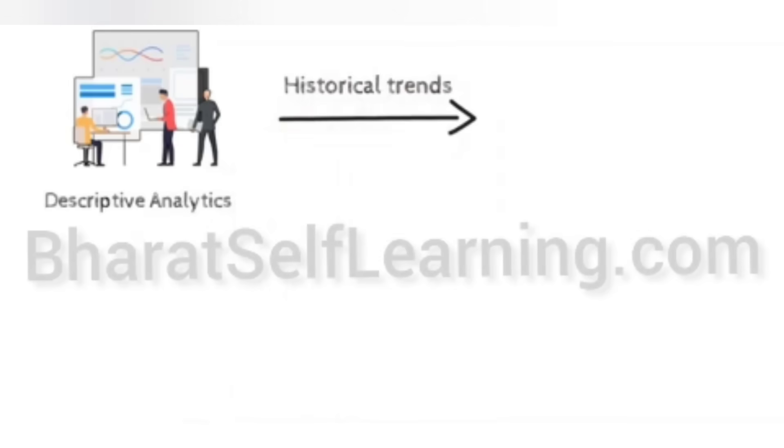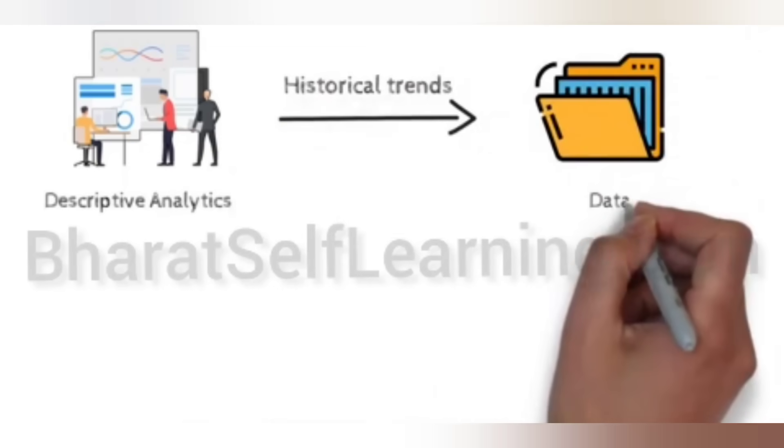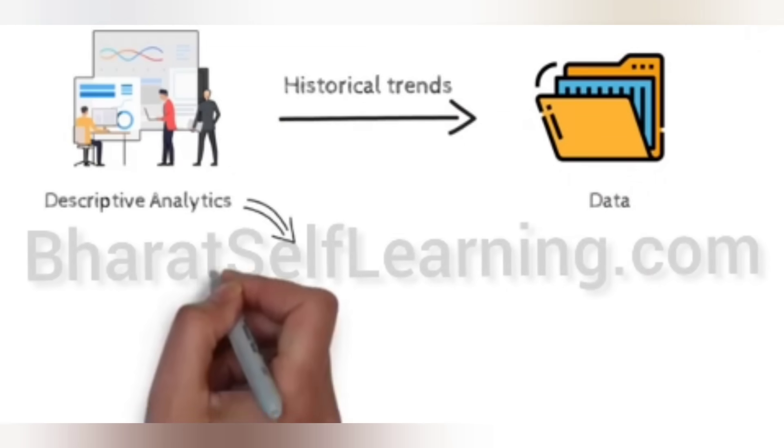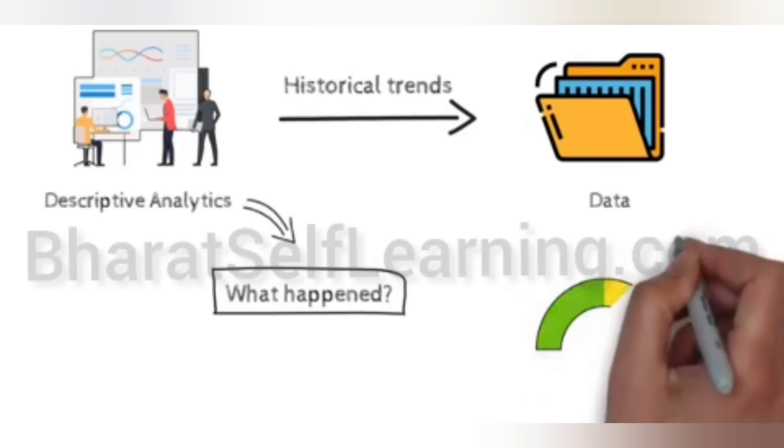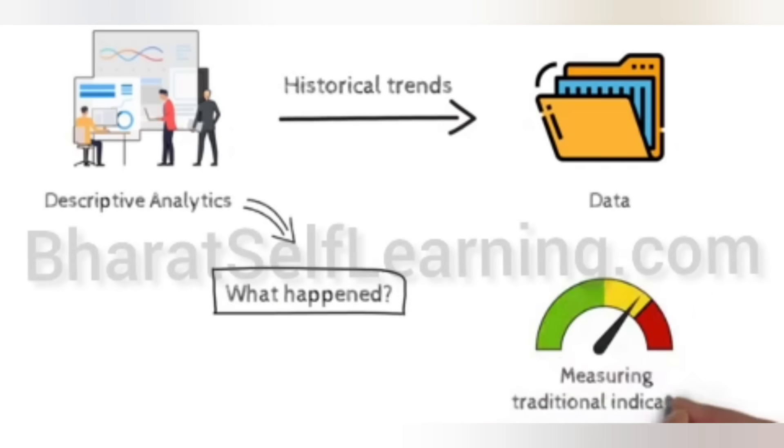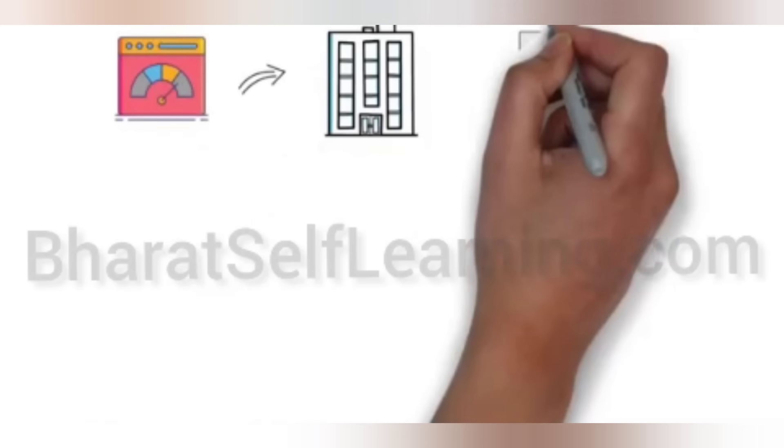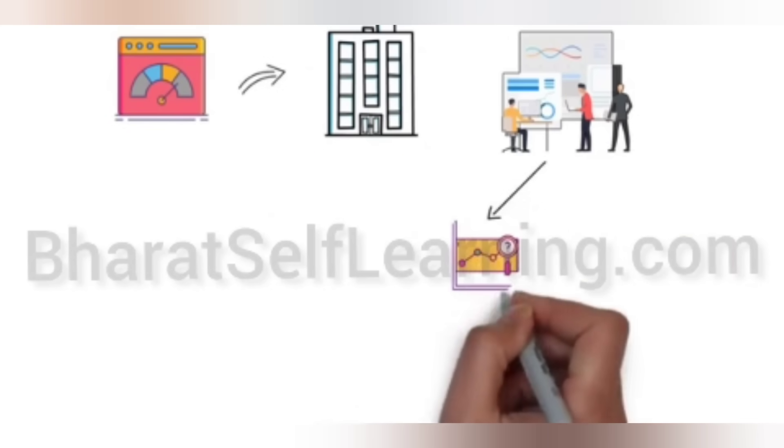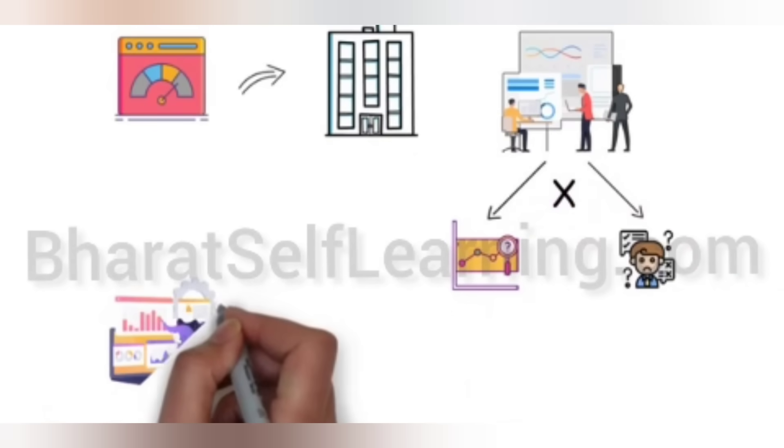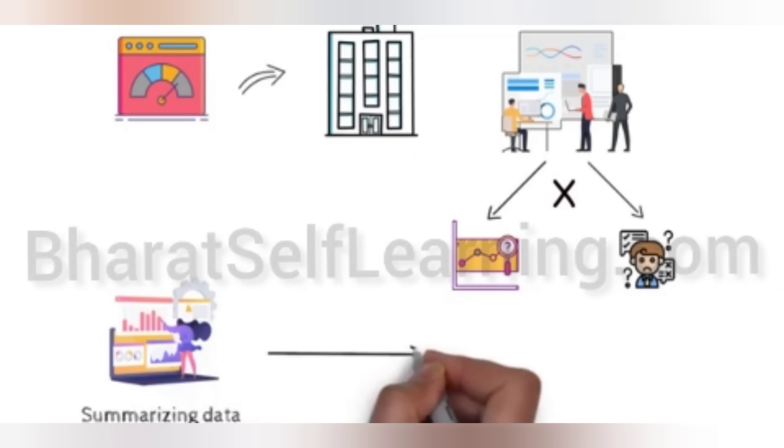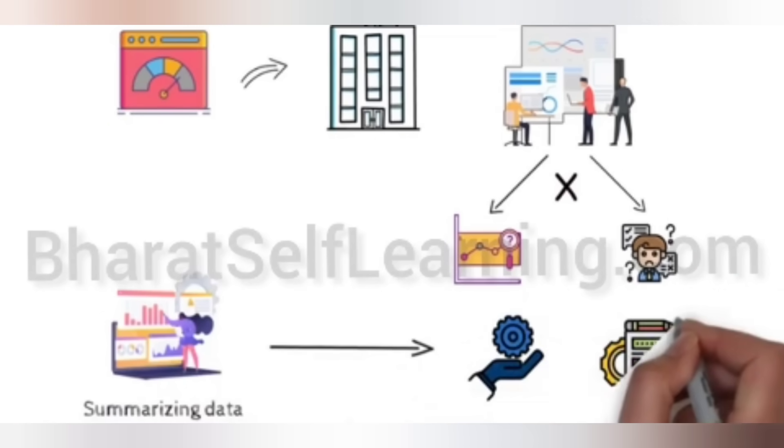This is the process of describing historical trends in data. Descriptive analytics aims to answer the question: what happened? This often involves measuring traditional indicators such as return on investment. The indicators used will be different for each industry. Descriptive analytics does not make predictions or directly inform decisions. It focuses on summarizing data in a meaningful and descriptive way.